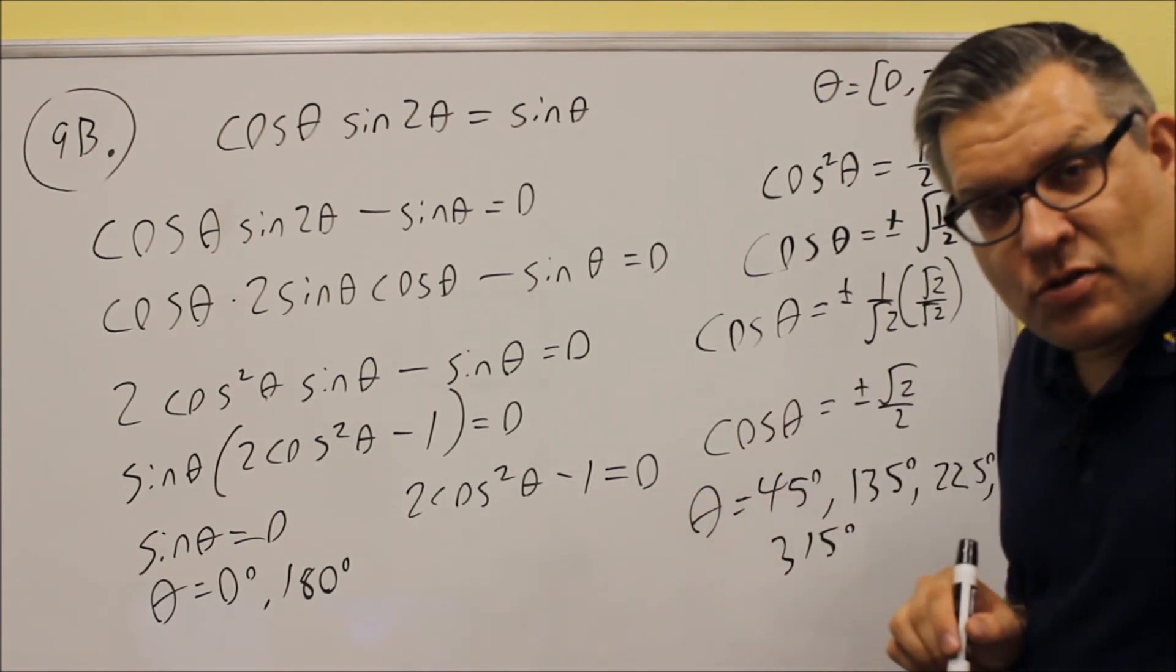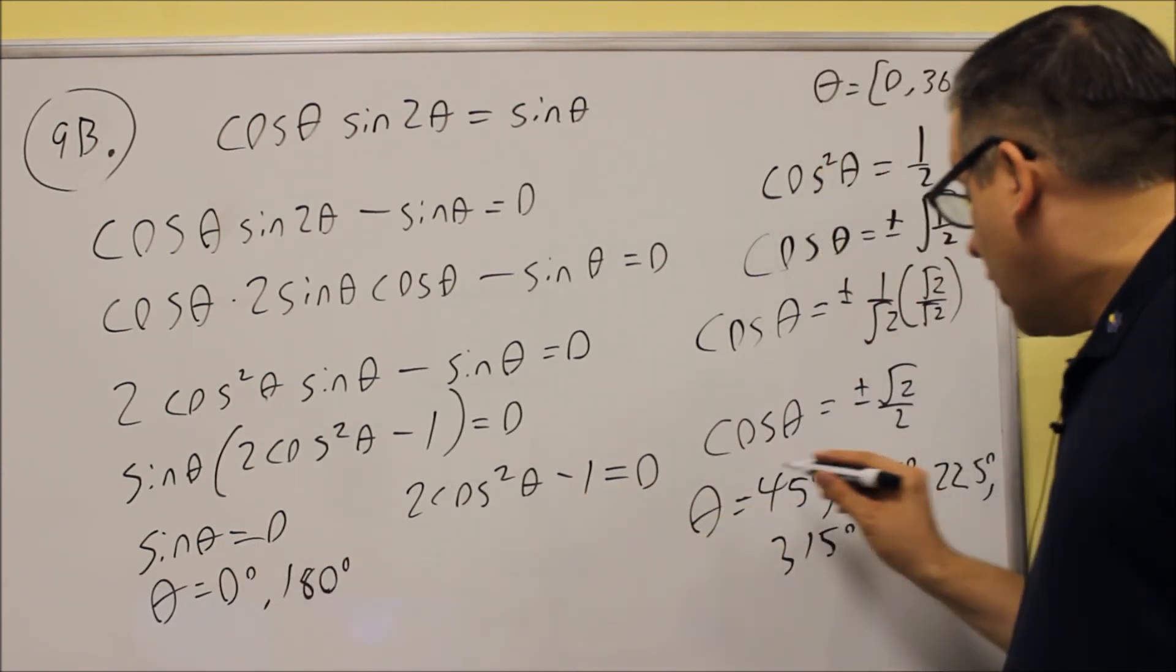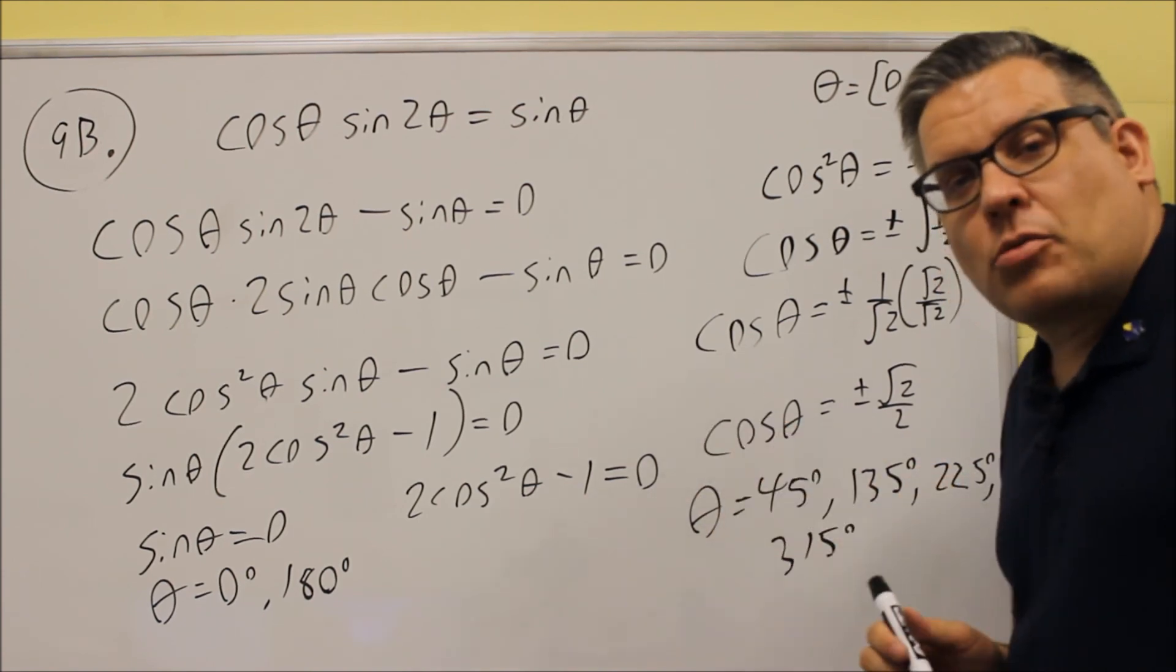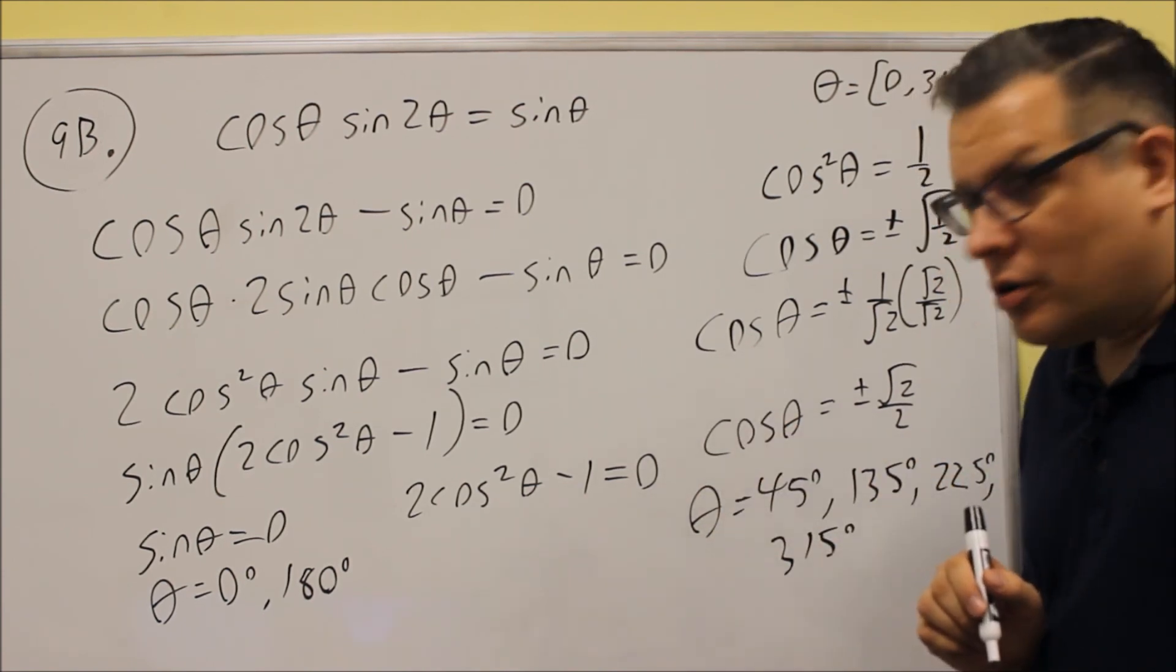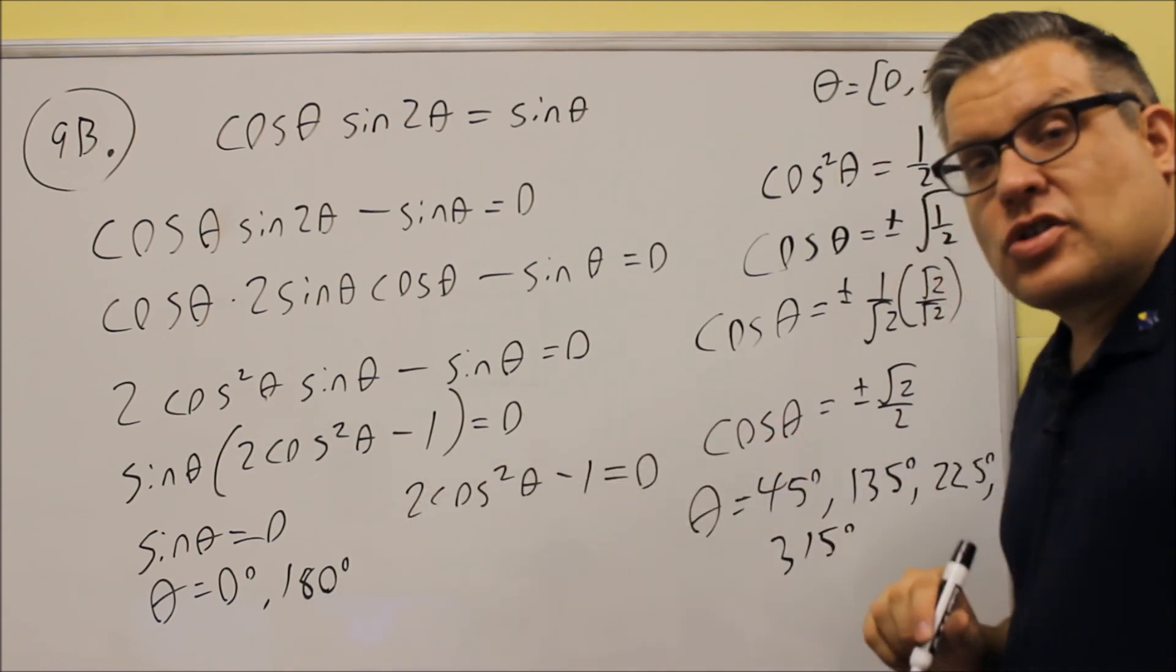So you'll have six answers on this one, these first two, and then these four angles. And when you're writing your answers in a number line, they don't have to be in order. Just as long as you have all six of them given there.